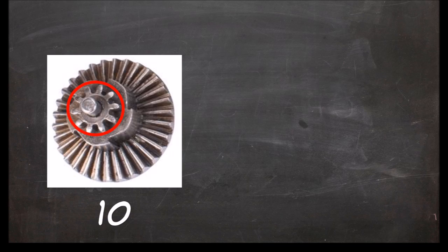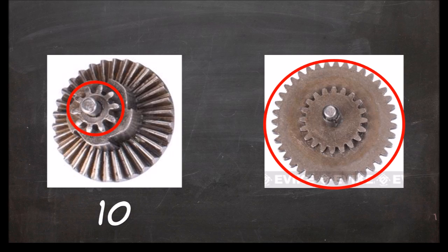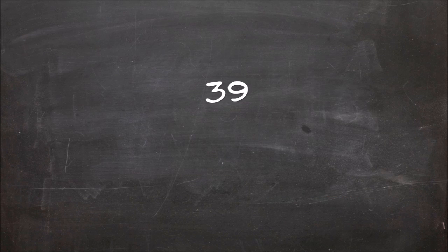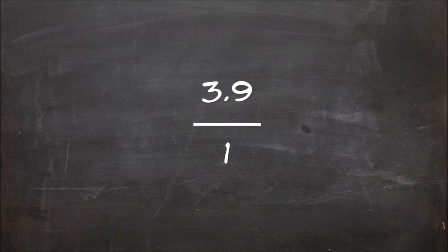Then there's the 10 teeth on the bevel that contact the 39 spur gear teeth. This ratio is 39 to 10 or 3.9 to 1.